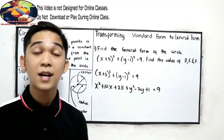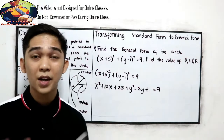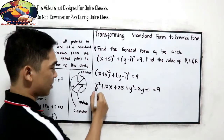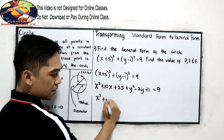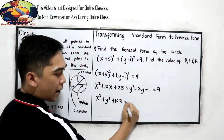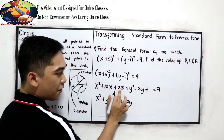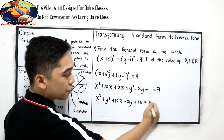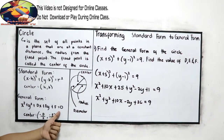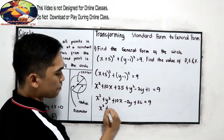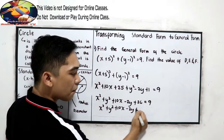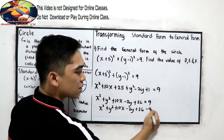Now combine like terms. While combining like terms, you can rearrange our equation. So x squared plus y squared, plus 10x, minus 2y. Then 25 plus 1 gives 26, minus 9, is equal to 0.